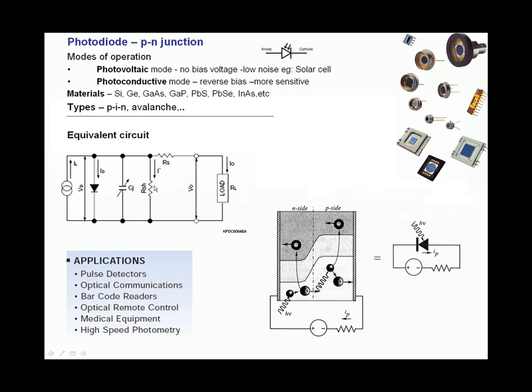Also shown is a shunt resistor and a junction capacitance. The shunt resistance determines how much dark current is present and this will be more clear when you actually do calculations to find out the minimum light detected by the photodiode.